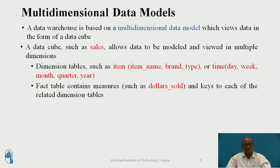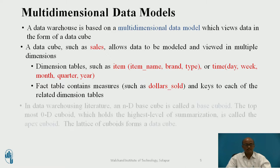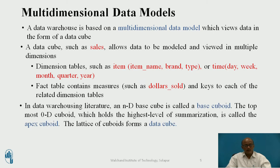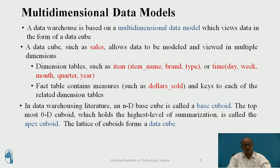The fact table contains measures such as dollars sold and keys to each of the related dimensional tables. In data warehouse literature, an n-dimensional cube is called a base cuboid. The topmost cuboid is called a zero-dimensional cuboid, which holds the highest level of summarization, is called the apex of the cube, and the lattice of cuboids forms a data cube.